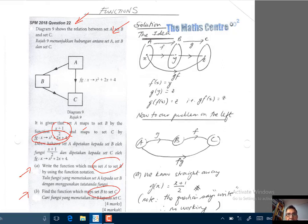Inilah satu soalan yang melibatkan bab fungsi di mana kita ada satu gambar rajah yang menunjukkan hubungan di antara set A, set B dengan set C.